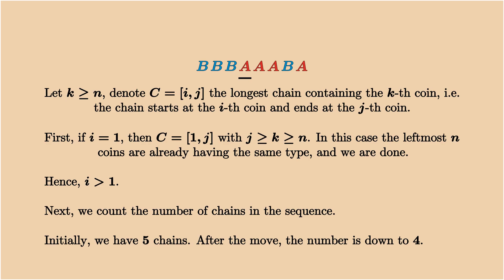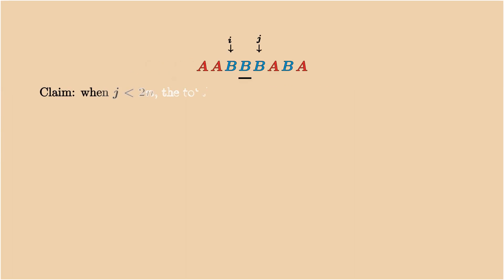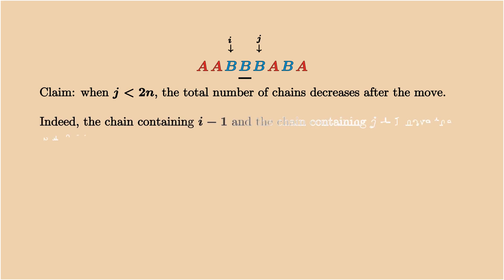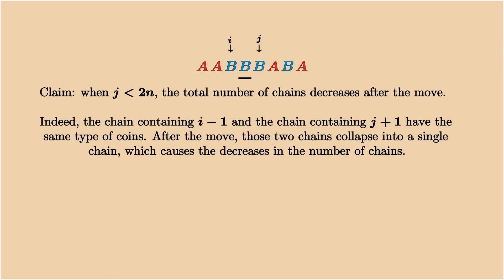So what we need to do is identify what triggers the decrease. My claim is that when j is smaller than 2n, the number of chains decreases after the move. Indeed, if this is the case, the chain containing i-1 and the chain containing j+1 exist, because i is strictly larger than 1 and j is strictly smaller than 2n.